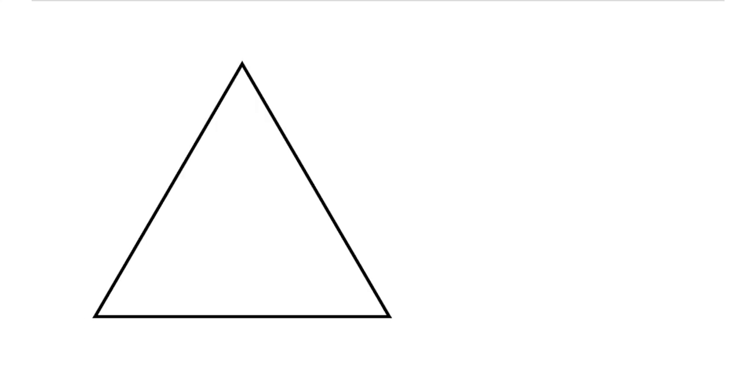So first of all, to prove the values for 30 degrees and 60 degrees, we're going to be looking at an equilateral triangle. An equilateral triangle is a triangle that has sides that are all equal and angles that are all equal. For this we're going to choose an equilateral triangle with side length 2, 2, and 2.